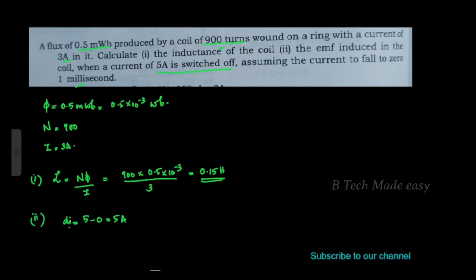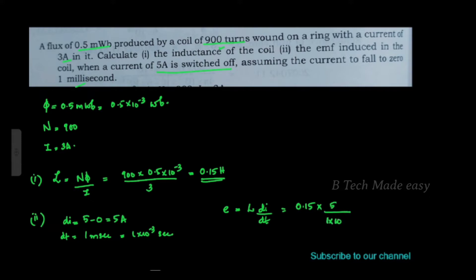The change in time DT is 1 into 10 raise to minus 3 second. EMF value: E is equal to L into DI by DT. This is equal to 0.15 into 5 divided by 1 into 10 raise to minus 3. This is equal to 750 volt.